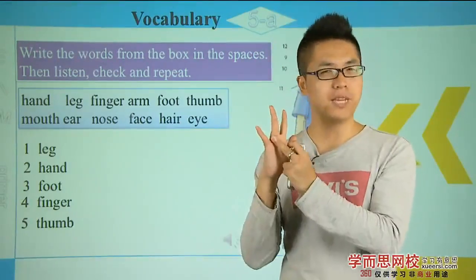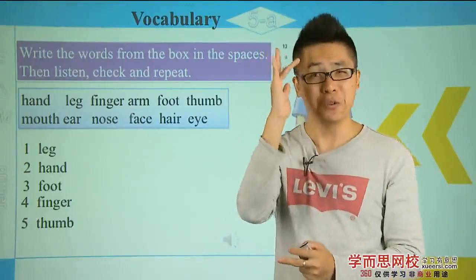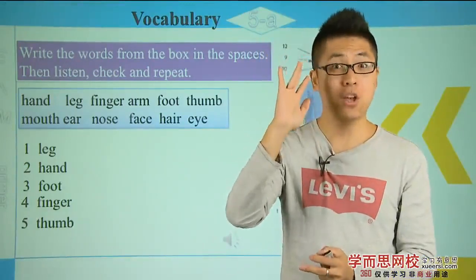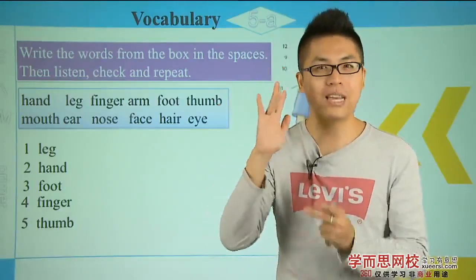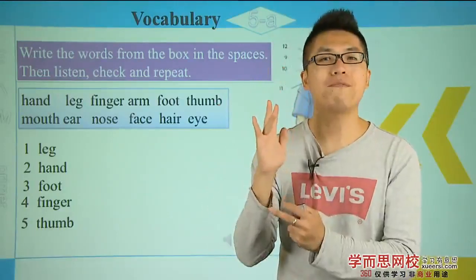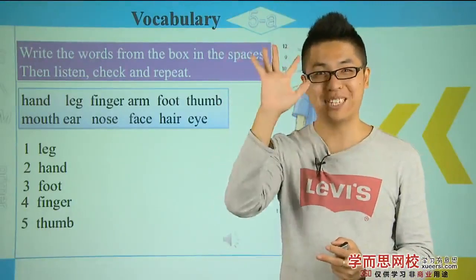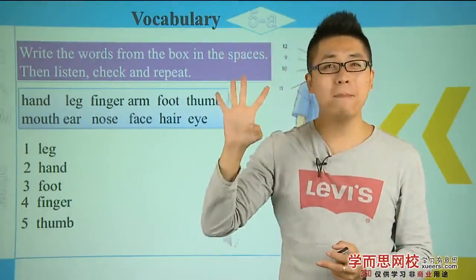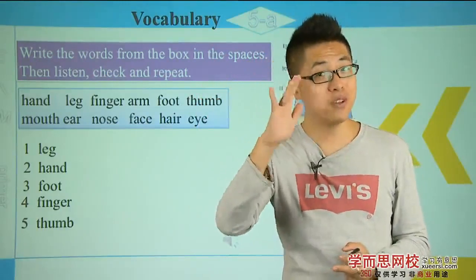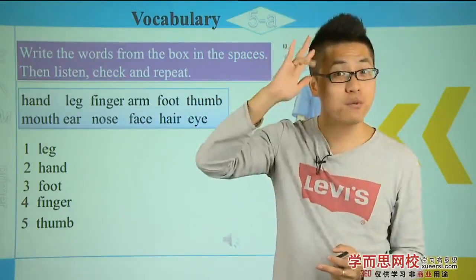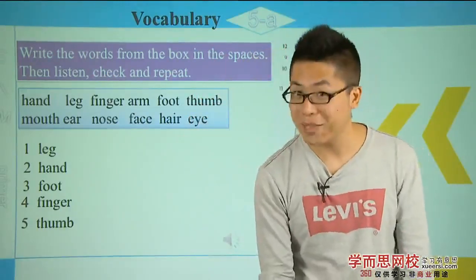Because we wear a ring on that finger when married, it's called the ring finger. The one in the middle is the middle finger. Let's read them one last time: thumb, index finger, middle finger, ring finger, little finger. Remember: thumb (大拇指), index finger (食指), middle finger (中指), ring finger (无名指), little finger (小拇指).